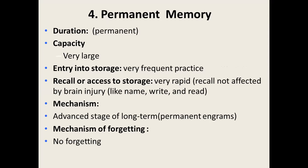Permanent memory has very large capacity. Entry requires very frequent practice — for example, repeating anatomy notes throughout the year. Recall is very rapid and is not affected by brain injury; even with a brain injury you can remember your name, write, and read. The mechanism involves formation of permanent memory engrams, and there is no mechanism of forgetting.